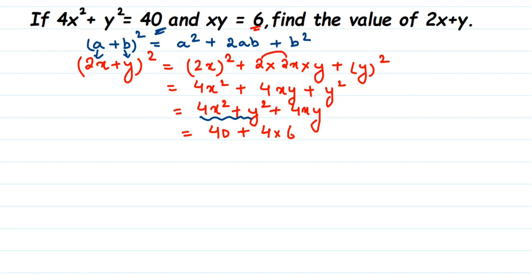4 × 6 = 24, so this equals 40 + 24 = 64. So (2x + y)² = 64. But we're not done yet — we have found the square of 2x + y, but we need only the value of 2x + y itself, without the square.